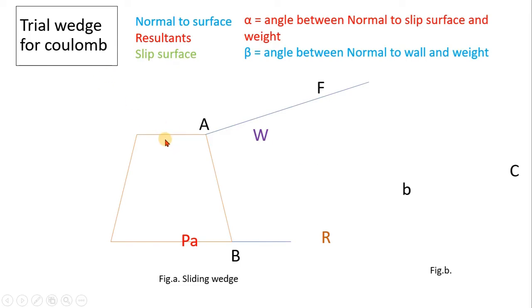Now we have already seen this figure while studying Coulomb's earth pressure theory. This is the retaining wall. This is the backfill slope, horizontal.